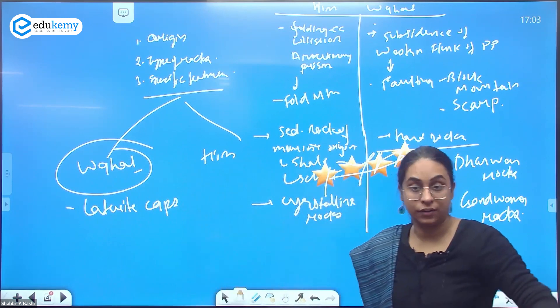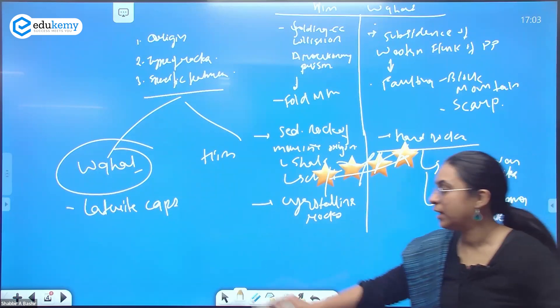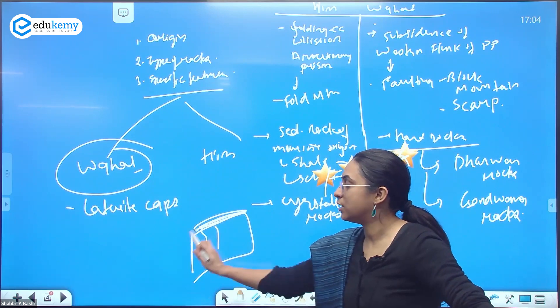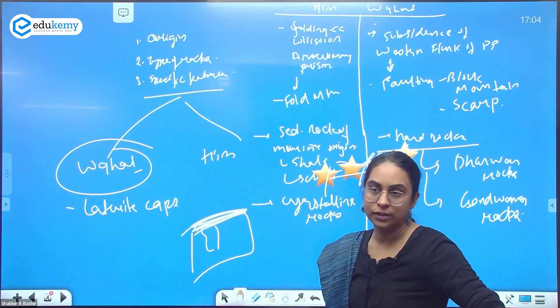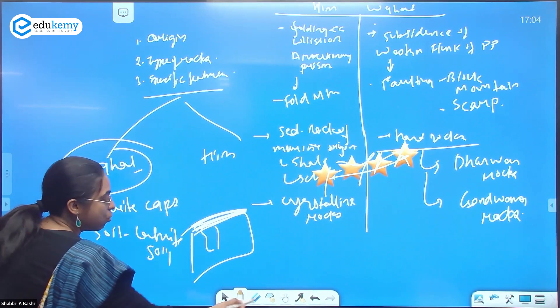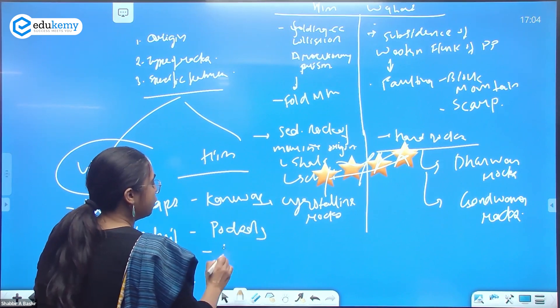For Western Ghats we have lateritic caps. Karewas is a good example when we talk about soil. If we look at the soil here, there are laterite caps. That means in a soil profile there is leaching, there is laterization, and there is a cap that has been formed called laterite caps. You have laterite soil here, you have montane soil and karewas, you have podzols, you have montane soil.